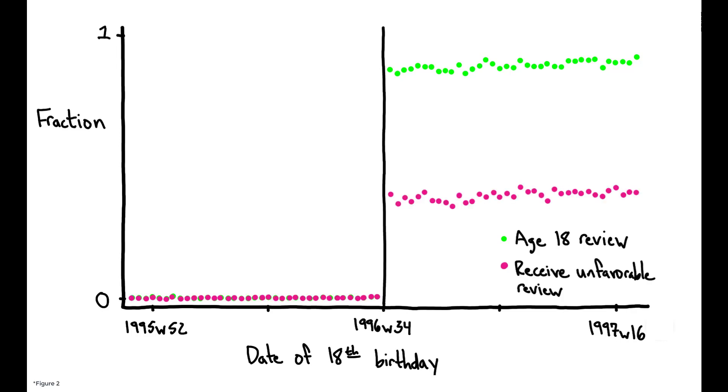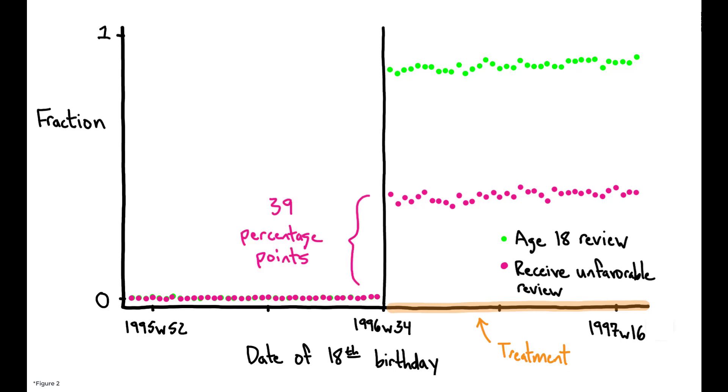Correspondingly, there is also a sharp increase in the probability of being removed from SSI. Despite the fact that these two groups are unlikely to differ systematically in any way except that their birthdays happen to fall just on either side of this cutoff, individuals to the right were 39 percentage points more likely to receive an unfavorable review and be removed from the program relative to individuals just on the left, call this the control group.